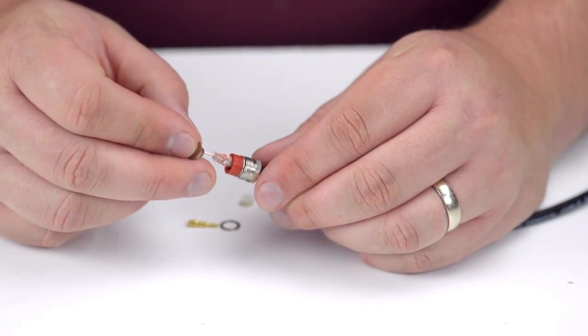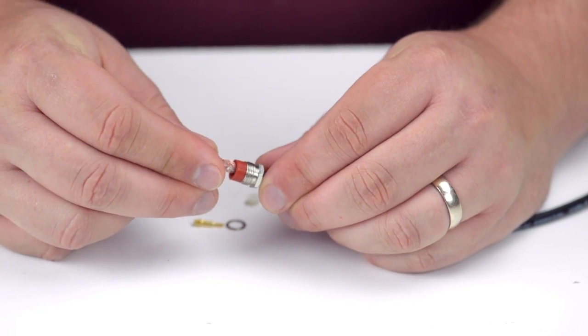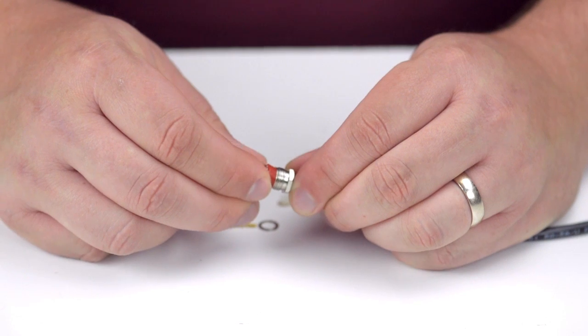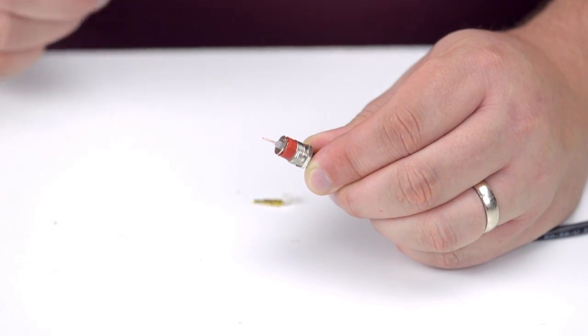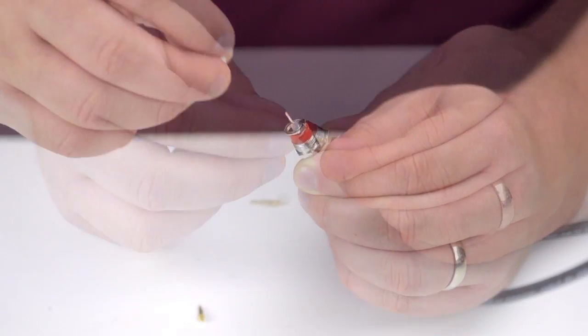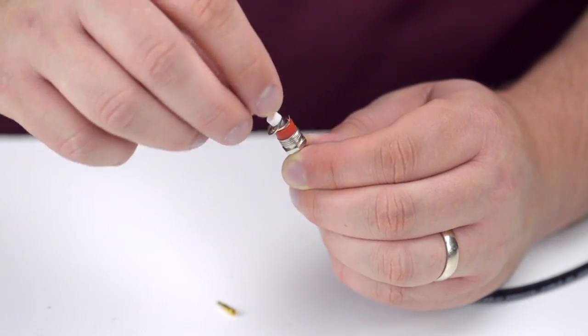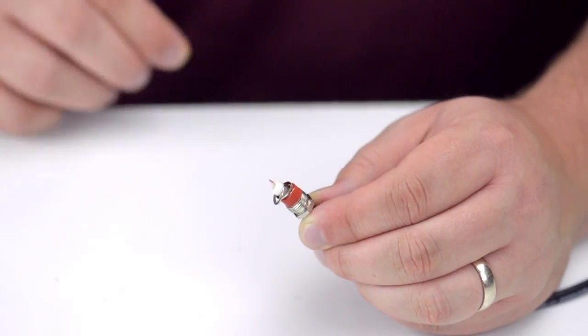Then insert the metal spacer and slide up the grommet, washer, and bolt. Insert the thin washer after that, and then the plastic spacer, and finally the pin. At this point the assembly should look like this.